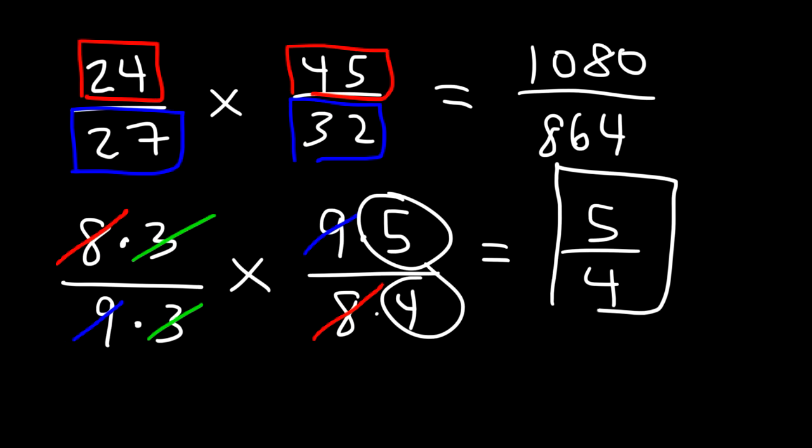As you can see this second method is a lot easier than the first. So if you have large numbers I would avoid multiplying them to get even bigger numbers. Instead simplify before you multiply.